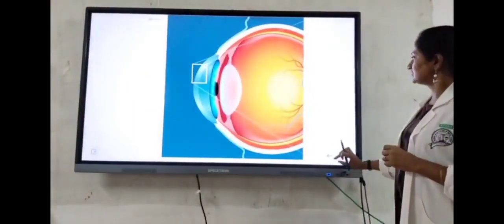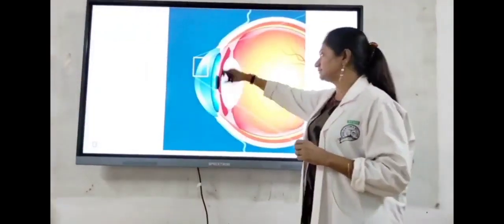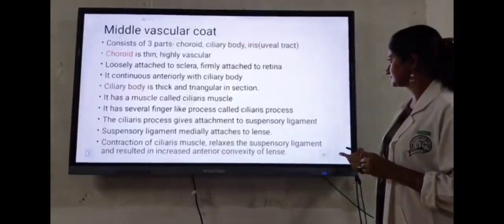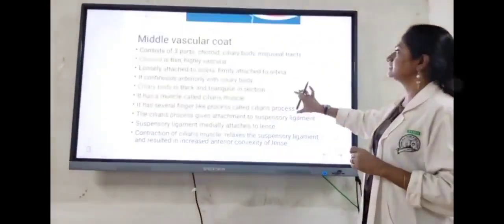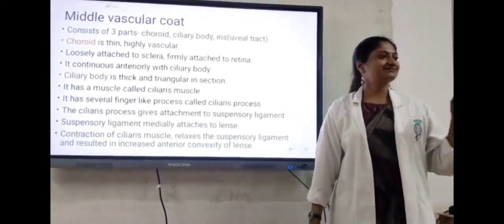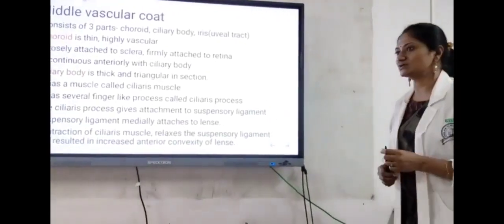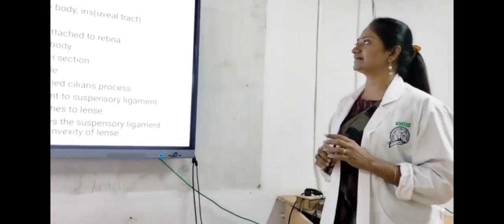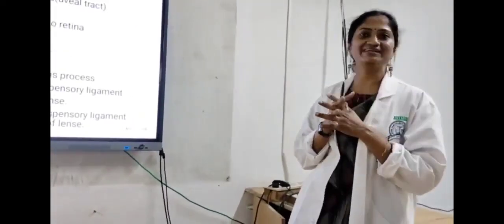The convexity of the cornea diminishes with age. You will see the middle vascular coat. The three parts of the vascular coat are the choroid, ciliary body, and the iris. They are collectively called the uveal tract.